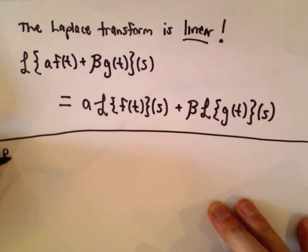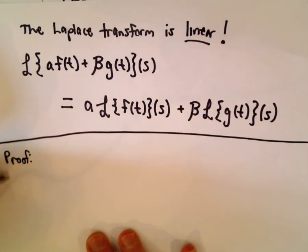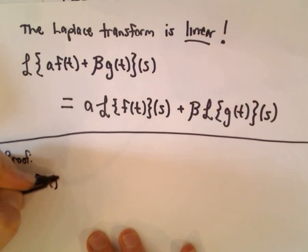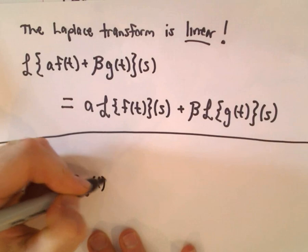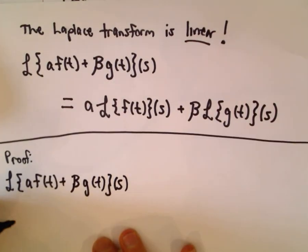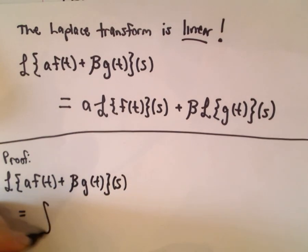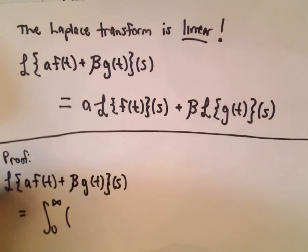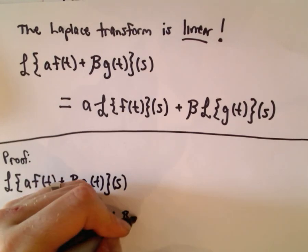Let's prove it real quick. The proof is super straightforward, basically just using the definition. So the Laplace transform of a f of t plus b times g of t of s, well by definition what that gives us is we go from 0 to infinity. This is our function a f of t plus b times g of t.